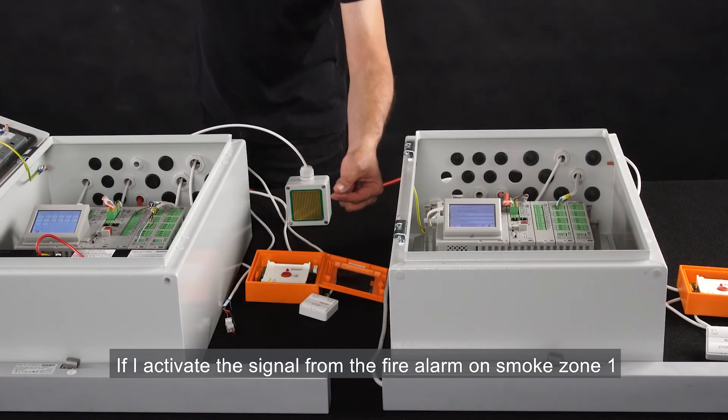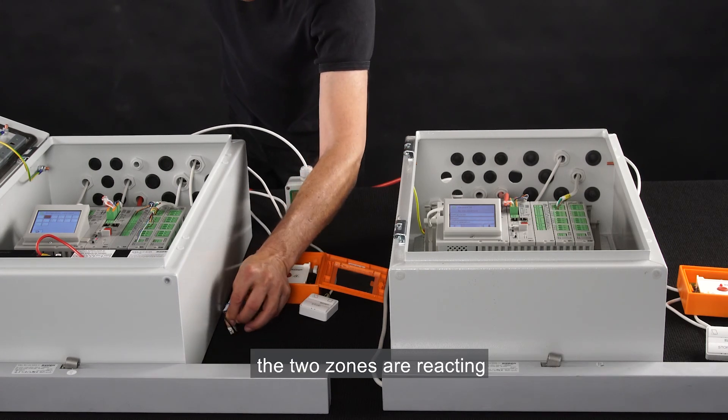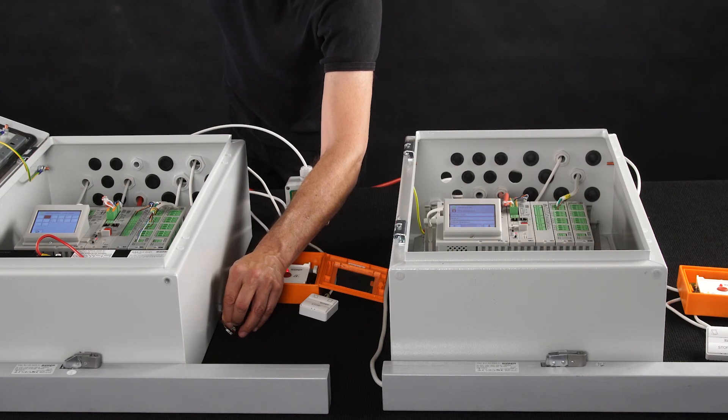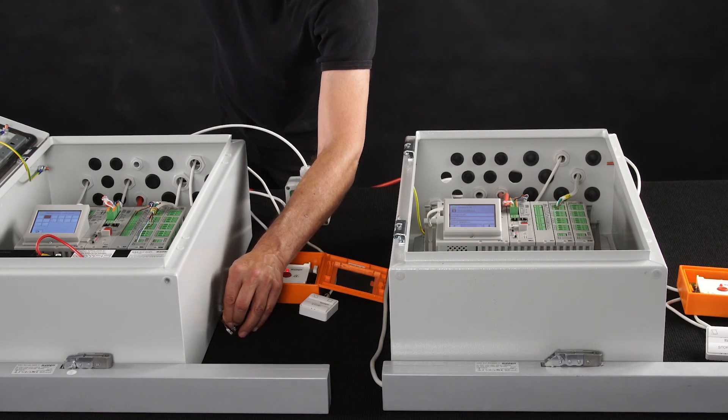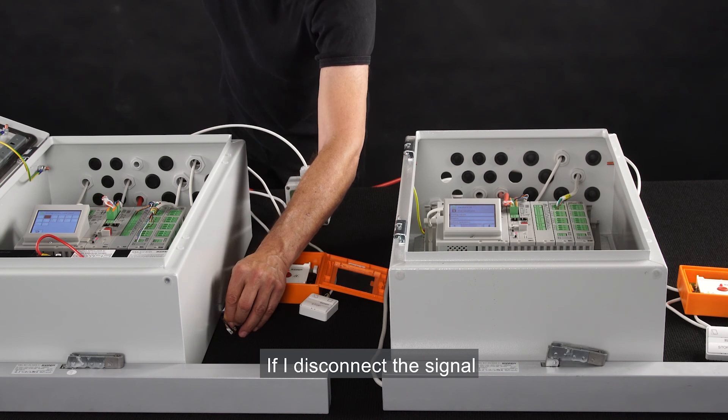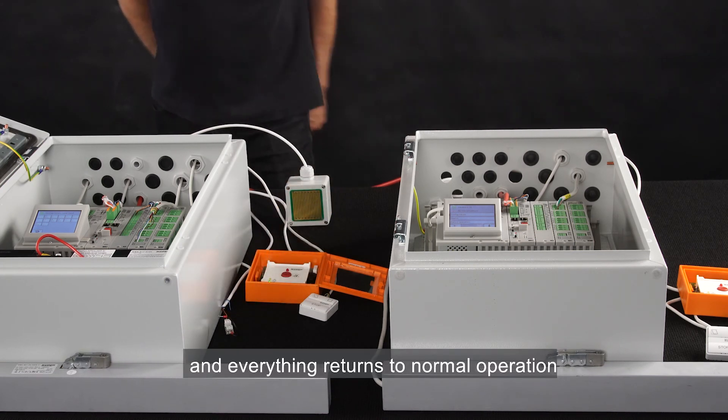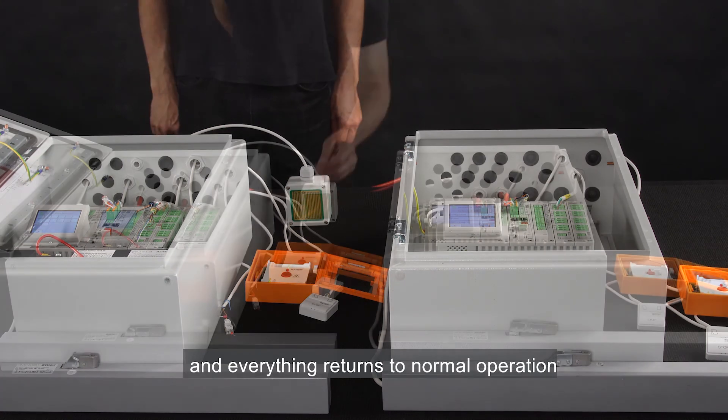If I activate the signal from the fire alarm on smoke zone 1, the two zones are reacting. If I disconnect the signal, the actuators are closing, and everything returns to normal operation.